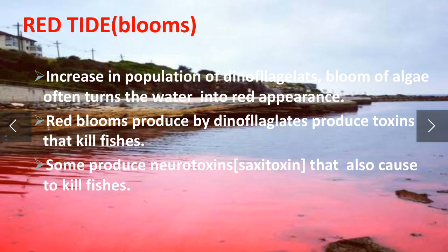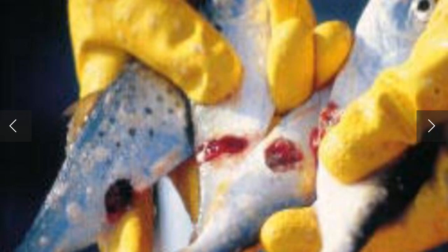Regarding red tides, an increasing population of dinoflagellates causes blooms of algae that often turn the water into a red appearance. Red blooms produced by dinoflagellates produce toxins that kill fishes. Some produce neurotoxins that also cause fish kills. You can see here images of dead fish.